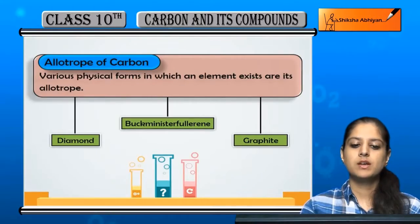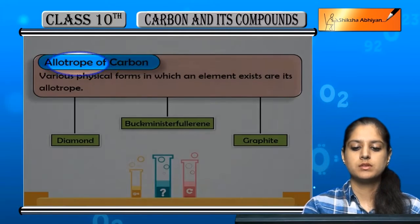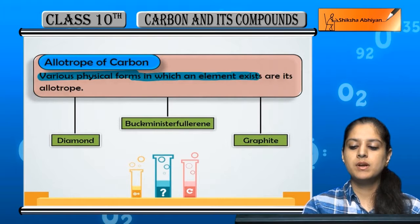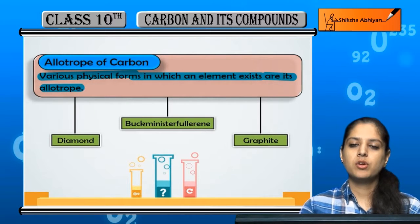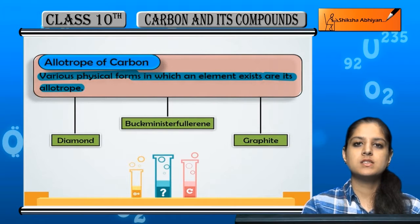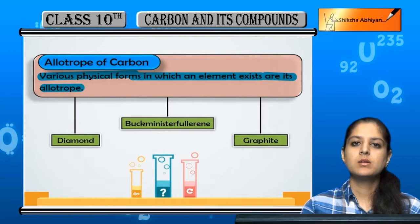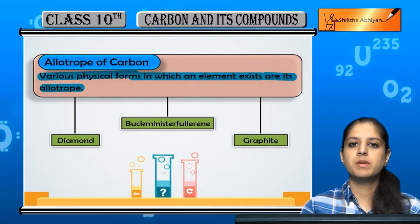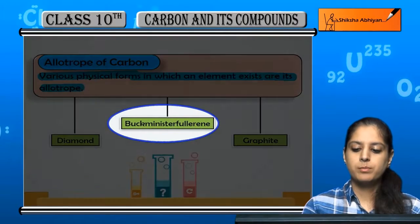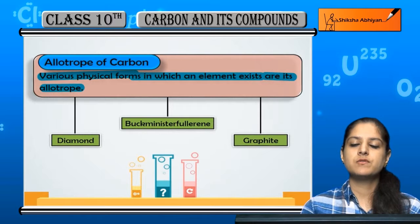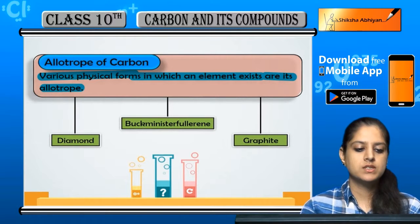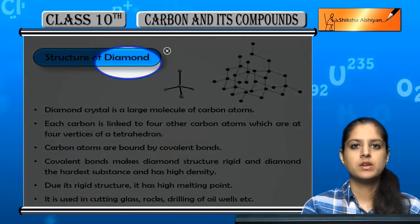Today's topic is allotropes of carbon. The various physical forms in which an element exists are its allotropes. Carbon exists in free state in three forms: diamond, graphite, and Buckminster Fullerene. These are the three physical forms of carbon and therefore the three allotropes of carbon. We will discuss each one.